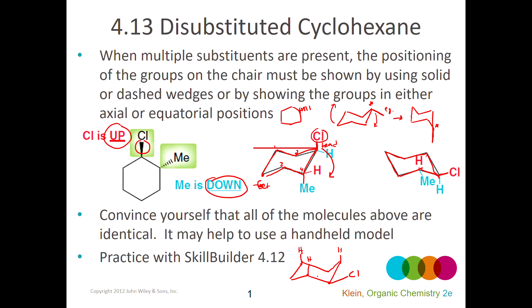The methyl group would be on the next carbon over with a dash wedge, which means down. The carbons that have a group pointing straight down from axial positions are specific ones, and the methyl group is not on one of those — so it would be pointing down and out toward you a little bit. All three versions of the ring shown are the same molecule, with chlorine having a solid wedge and methyl having a dash wedge. You must not put a solid wedge group pointing down or a dashed wedge group pointing up at all.